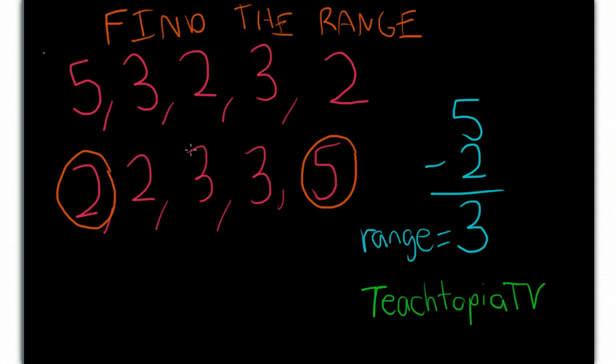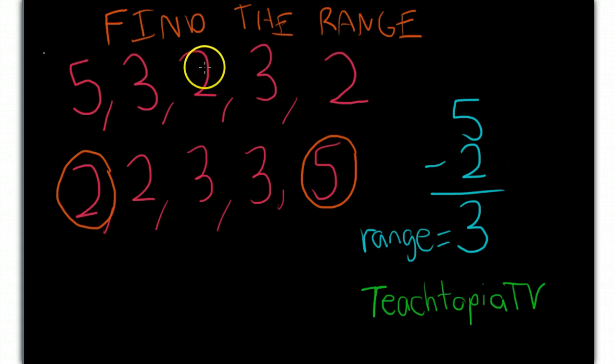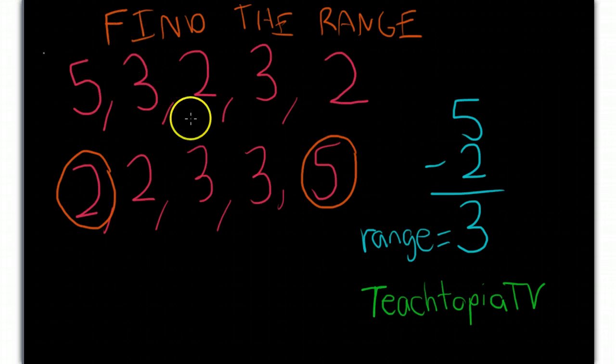Another way you get this kind of problem wrong is by not transferring the numbers correctly, making sure that here we have the 2 brought down here, here we have the 2 brought down here, here we have the 3 brought down here, here we have the 3 brought down here, and then finally the 5.